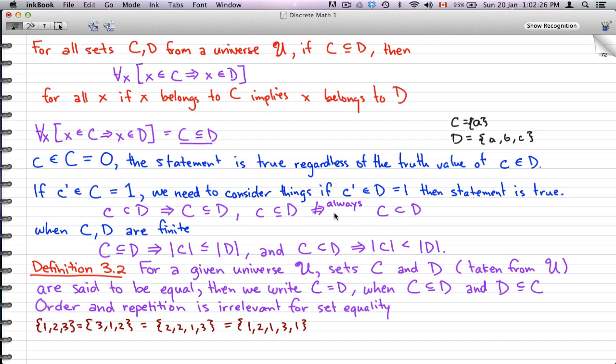Now we're going to finish this off with the definition. For a given universe U, sets C and D taken from U are said to be equal. Then we write C equals D when C is a subset of D and D is a subset of C. Order and repetition is irrelevant for set equality.